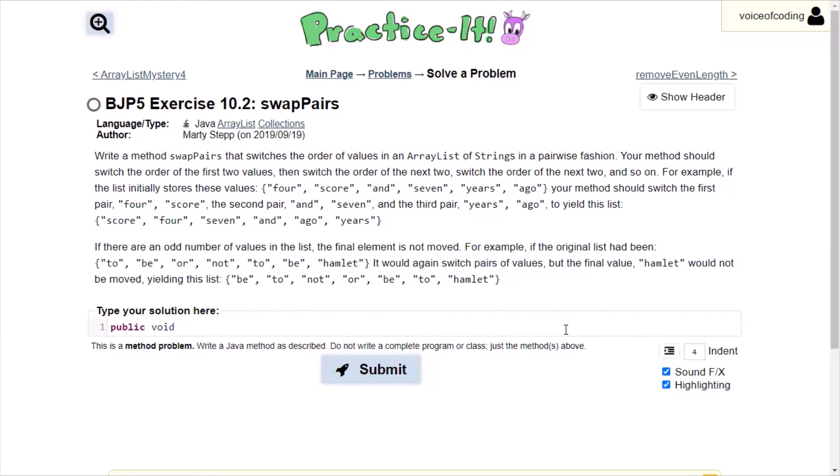So public void, and then they want to name it swapPairs. And then we'll be taking an ArrayList of strings as our parameter. I'm going to just call it list for this.